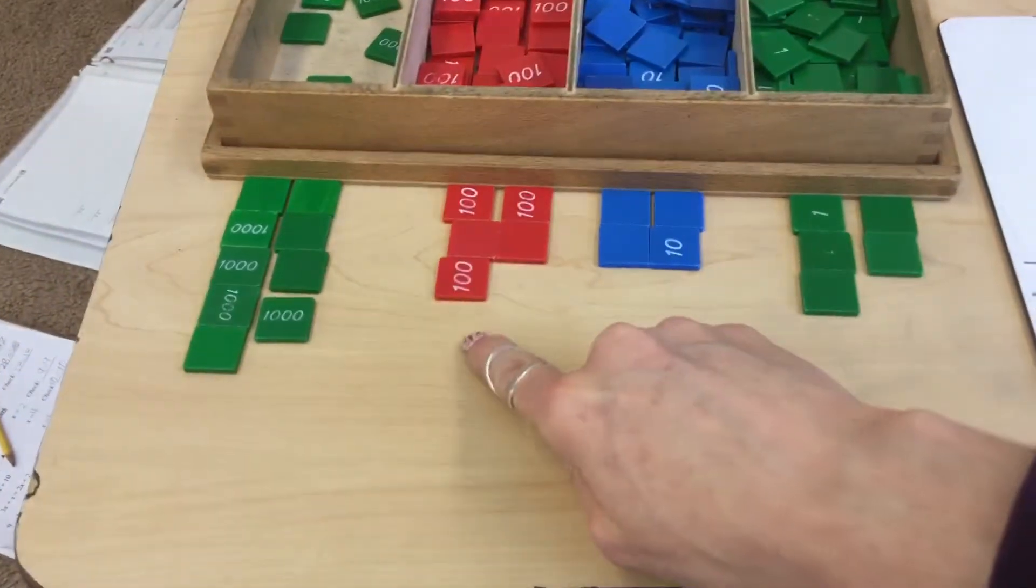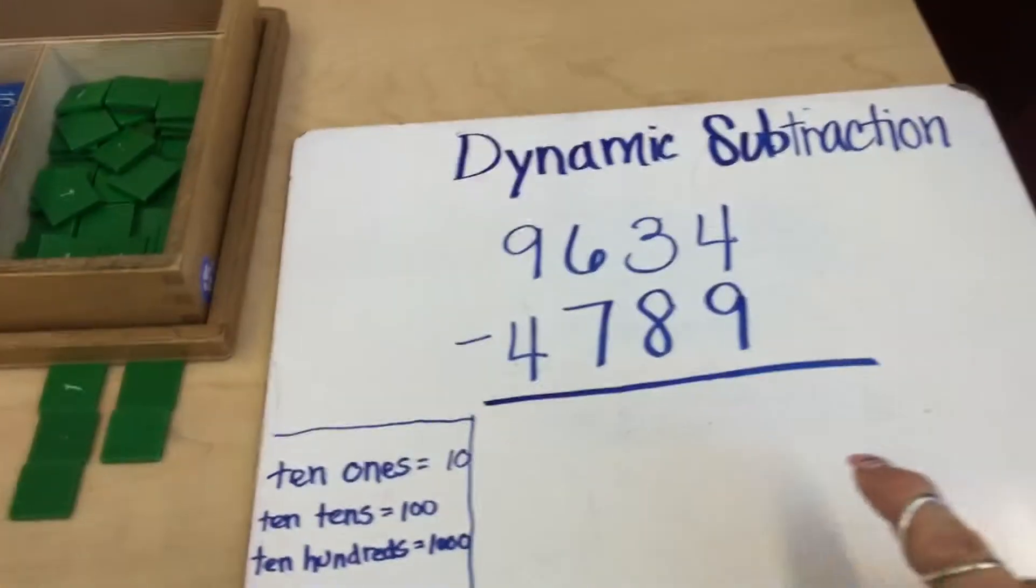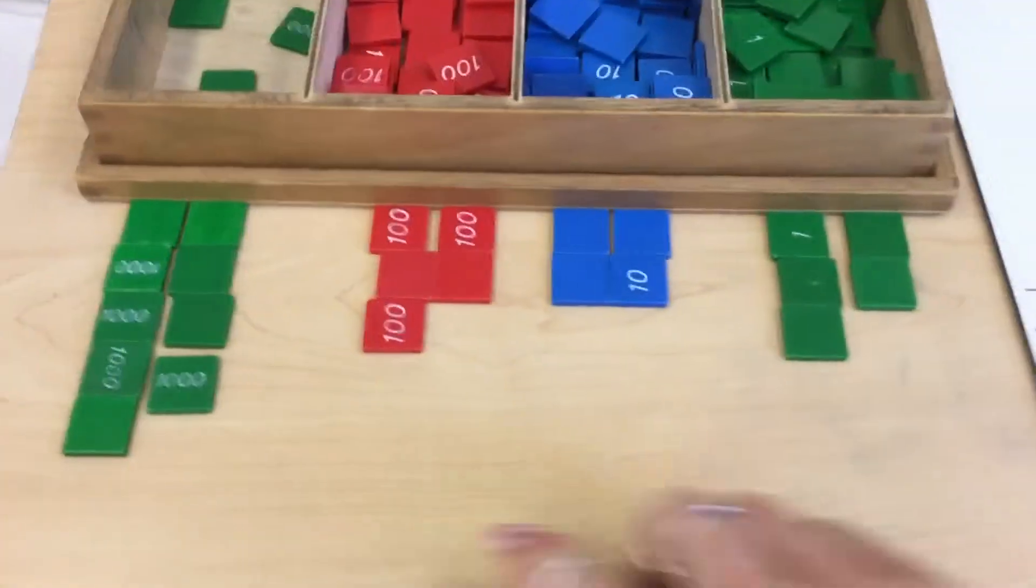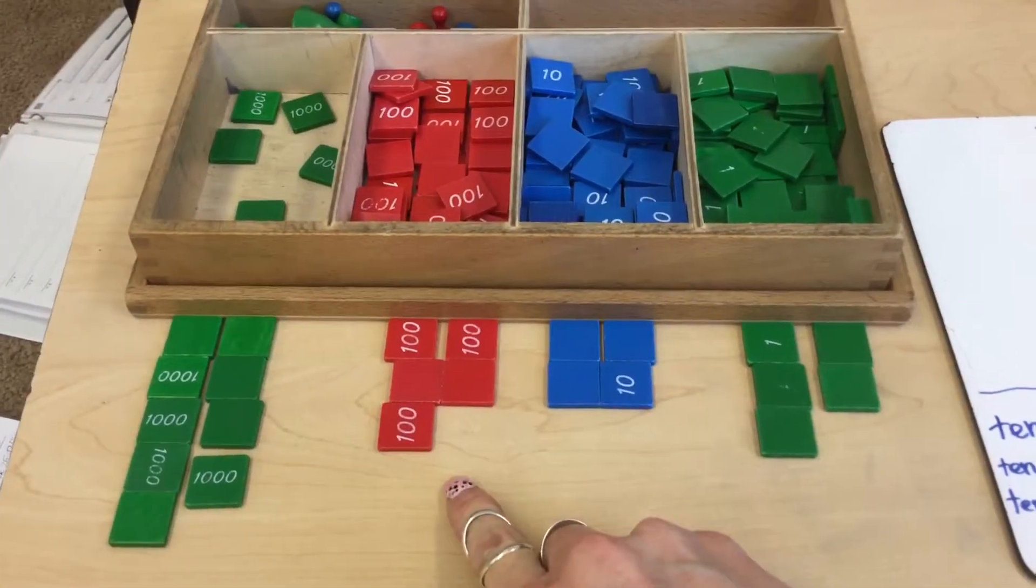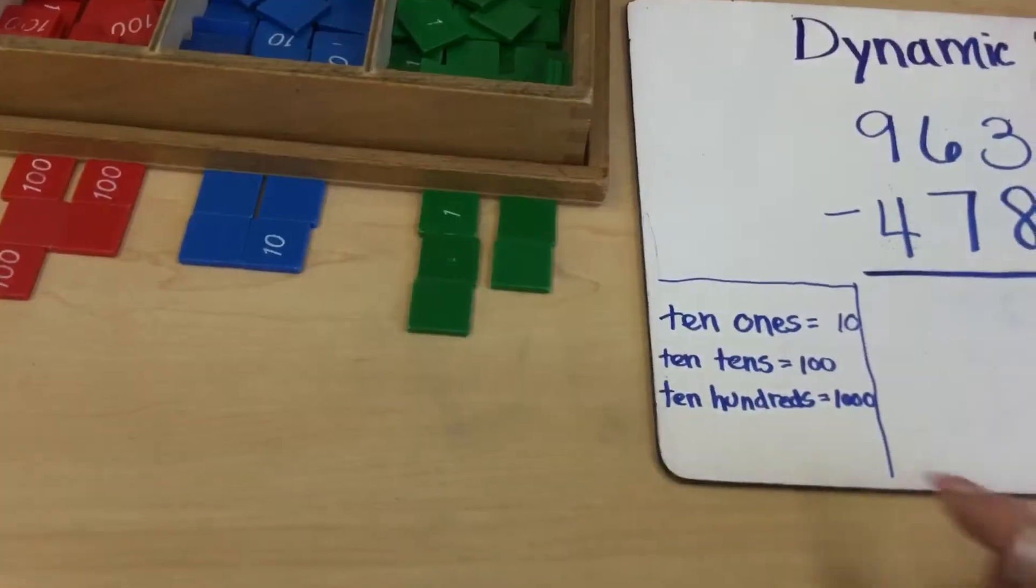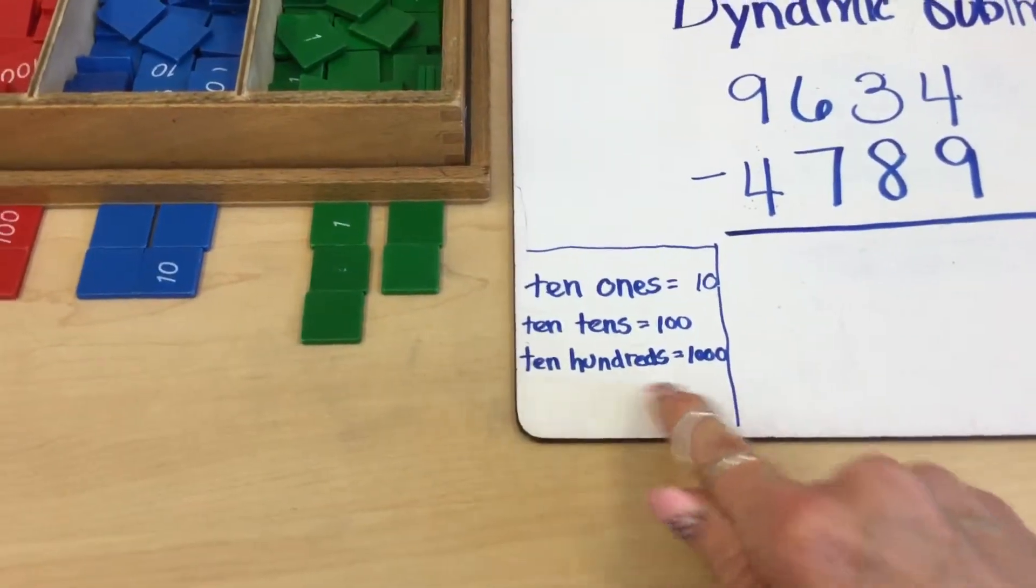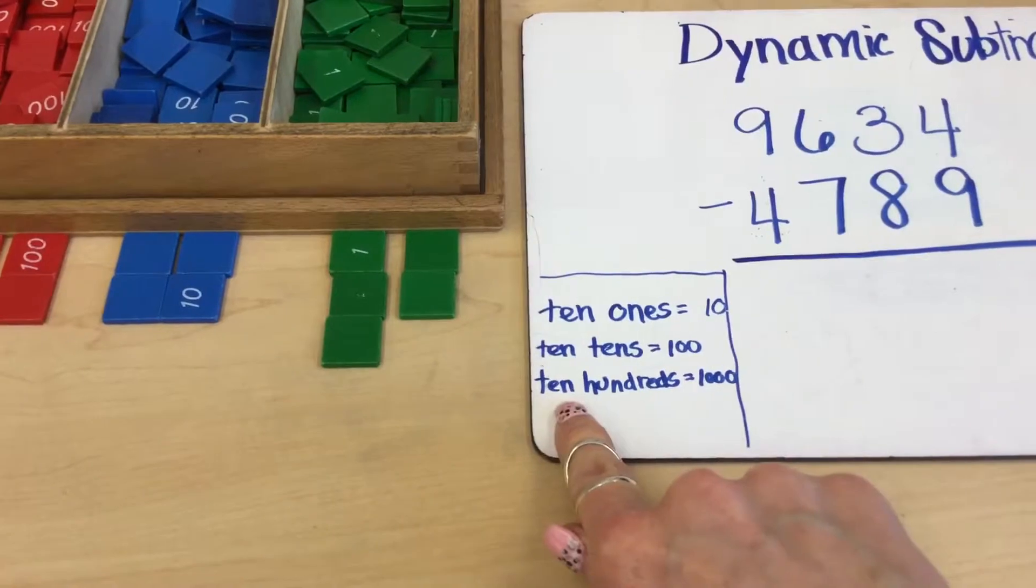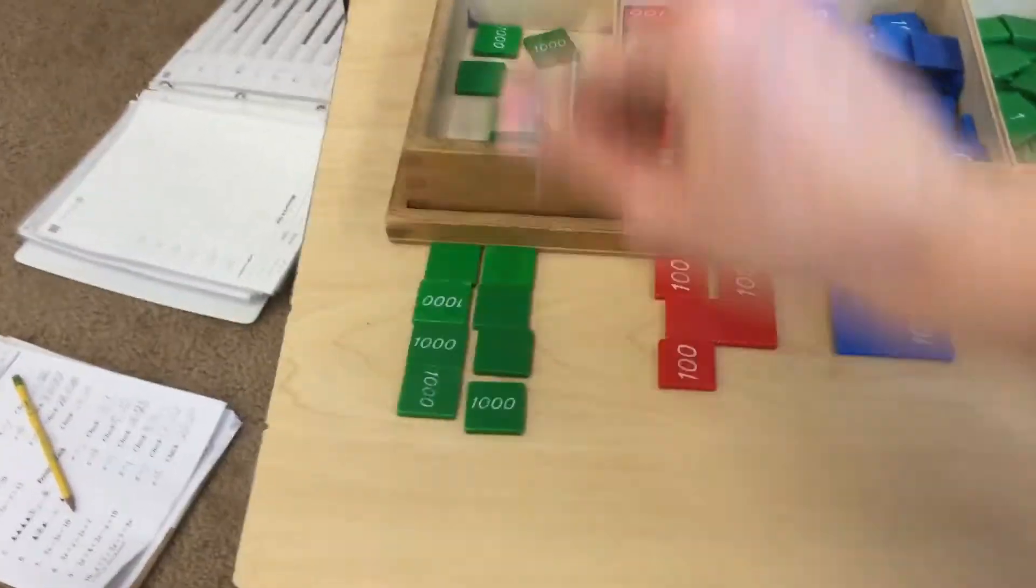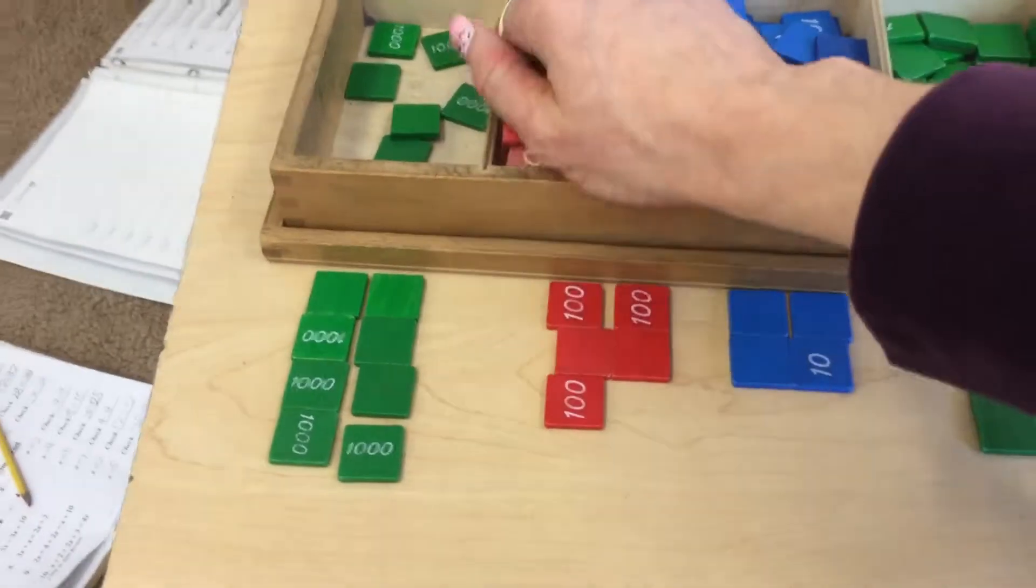Moving on to my hundreds. Looking here in my equation it says six taking away seven. Well I don't have seven, so I have to find some more hundreds before I can take my seven out. Once again I'm going to refer back here. I know that if I turn in a thousand I can get ten hundreds. So I am going to turn one of my thousands in to get out ten hundreds.